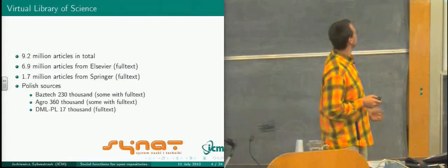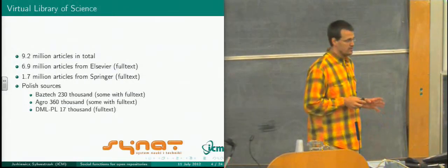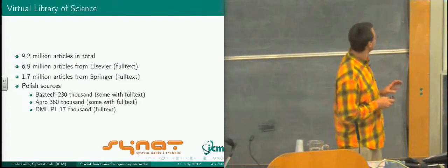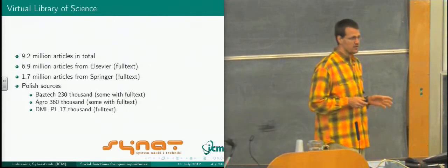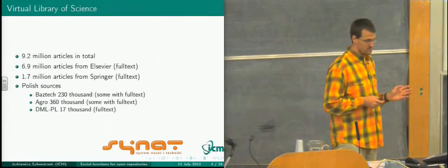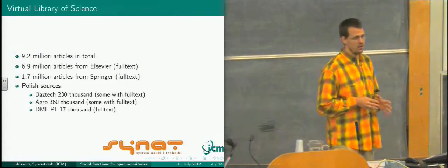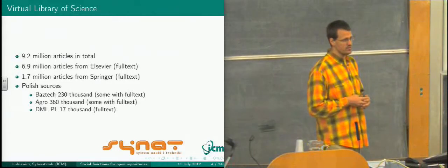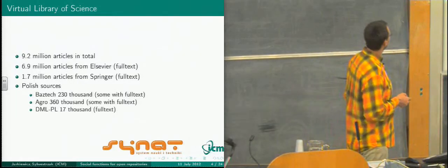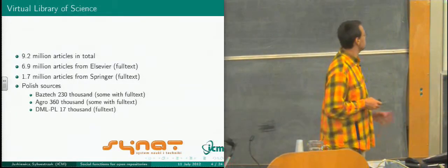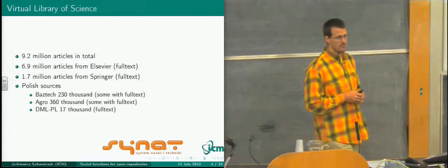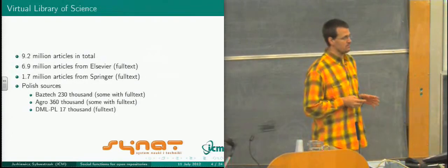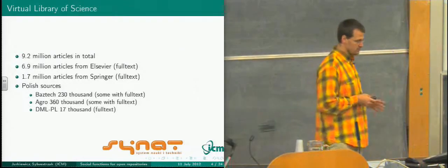The Virtual Library of Science is really impressive. We have 9.2 million articles, and most of them are full text. Some are only with bibliographical information like abstracts, because in 2001 it was not so popular for all contributors to provide full text. For example, BASTECH, which is a Polish source with 230,000 records covering most of Polish science and technology publishing, was generally into abstracts at the beginning, not full text.